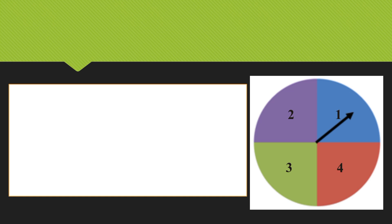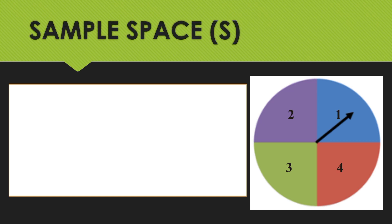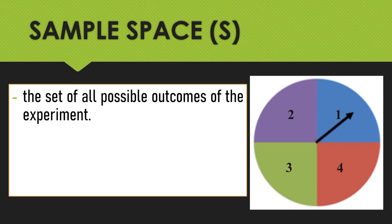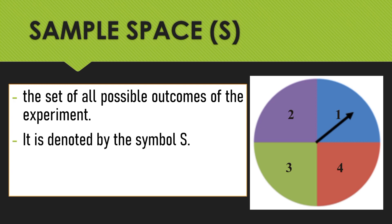In probability experiments, we are going to encounter the term sample space. When we are talking about sample space, it means it is the set of all possible outcomes of the experiment. It is denoted by the symbol S, so when you encounter the letter S, it means sample space.